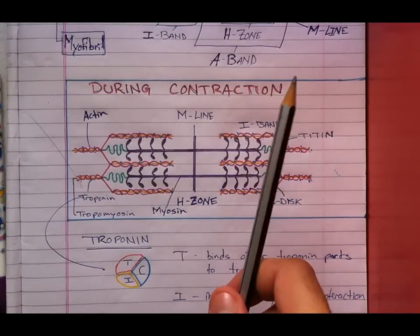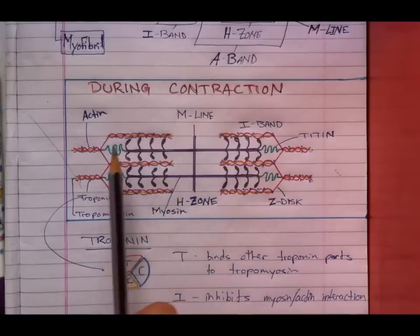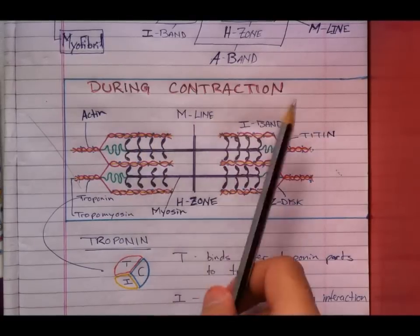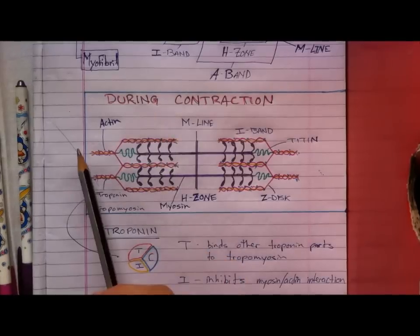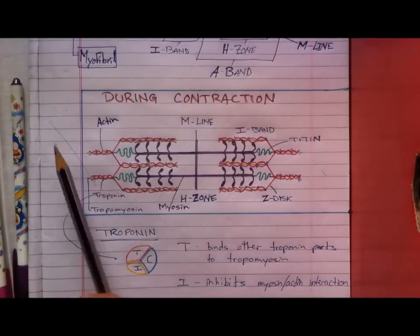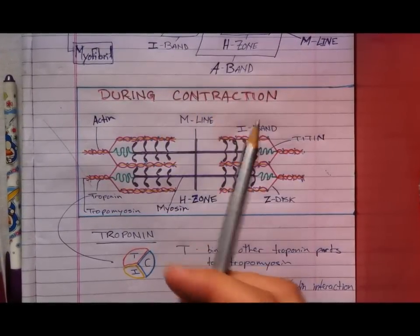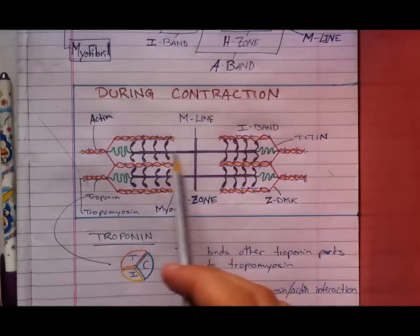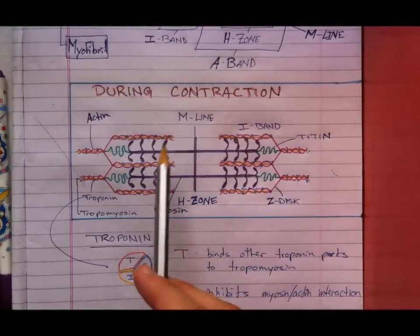When contraction occurs, the I-band shrinks because the sarcomere shrinks. The myofibril is made up of thick and thin filaments. First off, the thick filament, which is made up of myosin, has two globular heads.